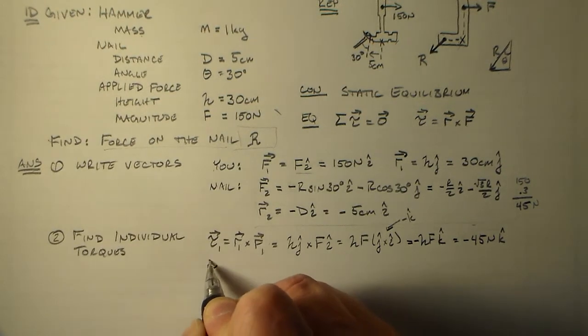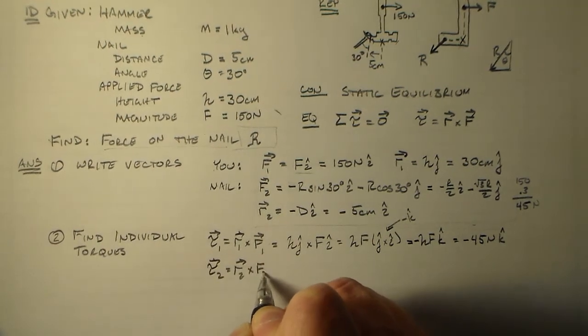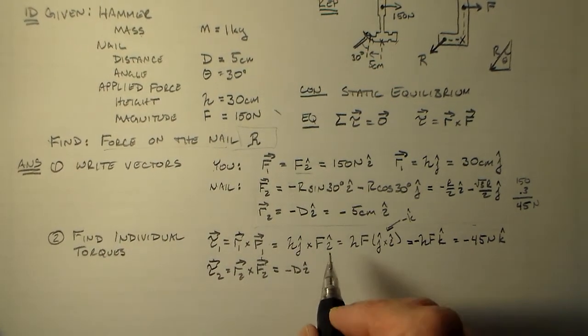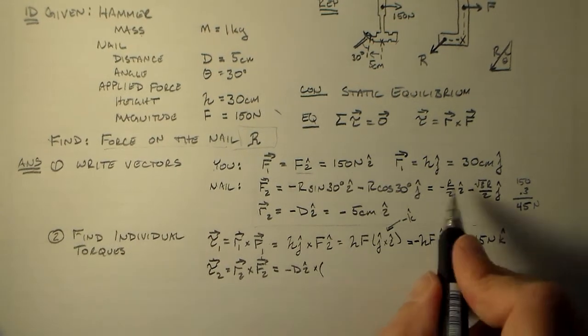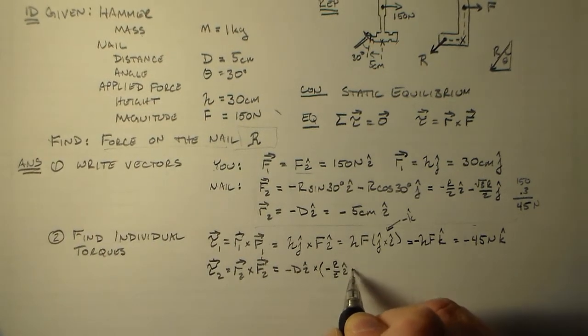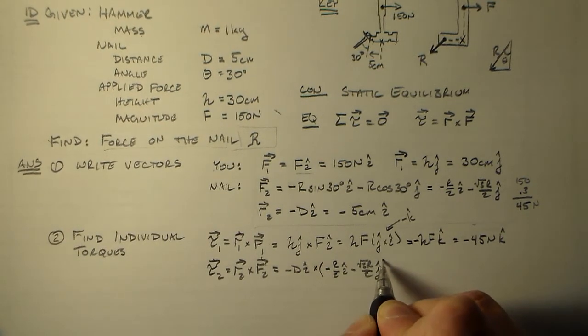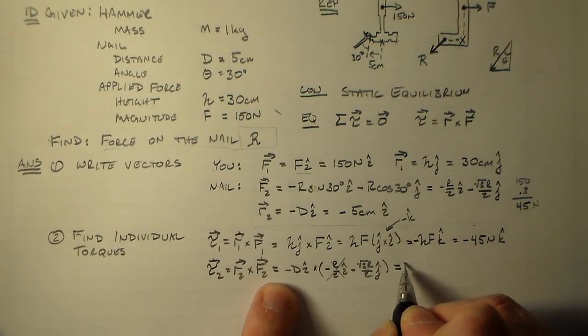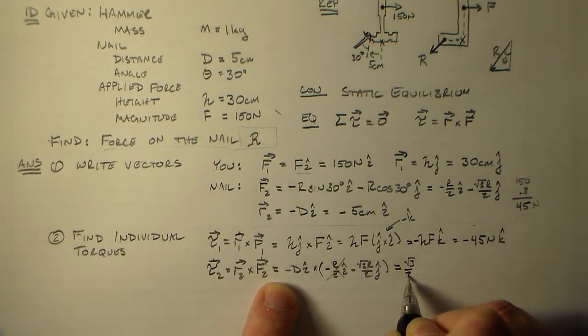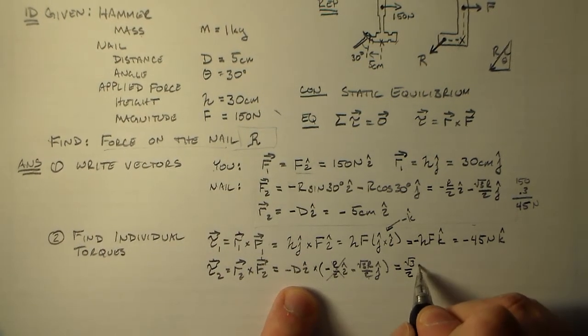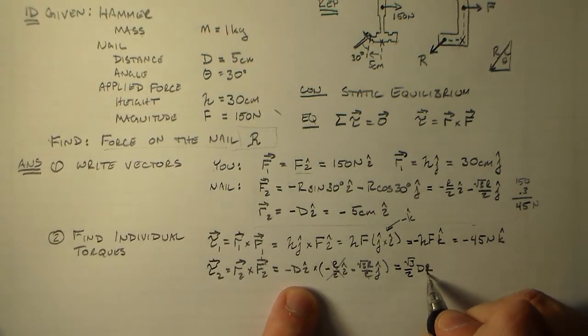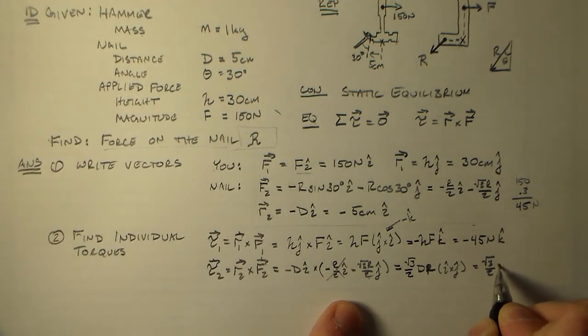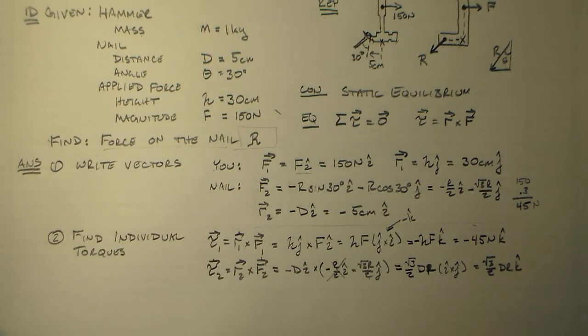So we also need tau 2, which is R2 cross F2. R2 we just said is minus D i hat cross F2, which was minus R over 2 i hat minus square root of 3 r over 2 j hat. So i cross i is 0. So we end up with minus times minus square root of 3 over 2 times dr. Remember, r is a force. I hat cross j hat is just K. So this is square root of 3 over 2 dr k hat.